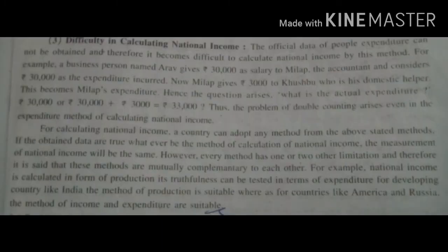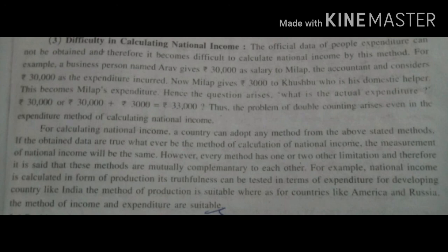Regarding the difficulty in calculating national income through the expenditure method: the official data of people's expenditure cannot be obtained correctly, making it difficult to calculate national income. For example, a businessperson named Araf gives 30,000 as salary to Milab, his accountant, and considers 30,000 as the expenditure incurred. Milab then gives 3,000 to Khushbu, his domestic helper. The question is: what is the actual expenditure — 30,000 or 33,000? So even in this method, the problem of double counting arises.